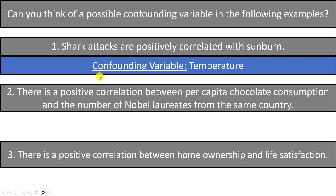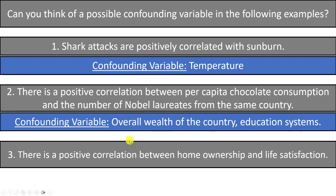There is also a positive correlation between per capita chocolate consumption and the number of Nobel laureates from the same country. The causal explanation would say to feed people more chocolate to win more Nobel prizes — but that's probably not right. A more likely confounding variable is the overall wealth or education system of the country, which could drive both higher chocolate consumption and greater likelihood of winning Nobel prizes.